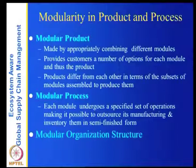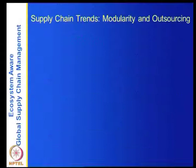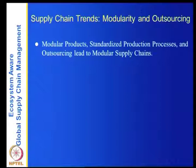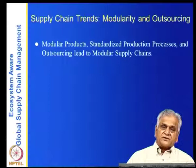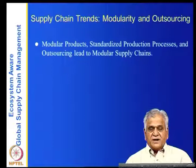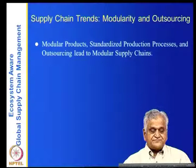From modular products and modular processes you get modular organization structures. Key supply chain trends include modularity and outsourcing: modular products mean standardized production processes, and outsourcing led to modular supply chains. Tier-one suppliers outsource particular components to tier-two, tier-three suppliers and so on. The components follow standardized production processes and are hence outsourced to low-cost countries. Combined, as shown in the multi-tier supply chain diagram, this becomes a modular supply chain.